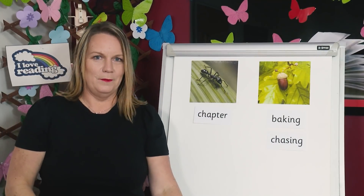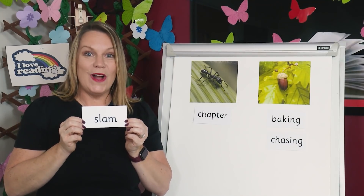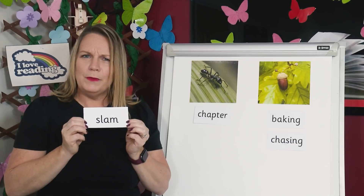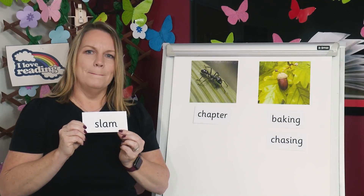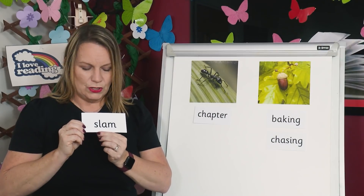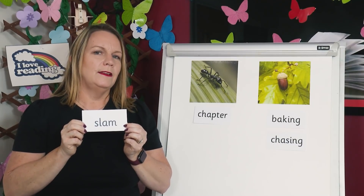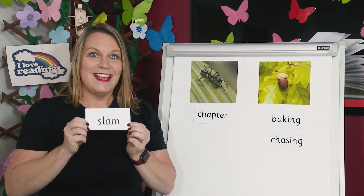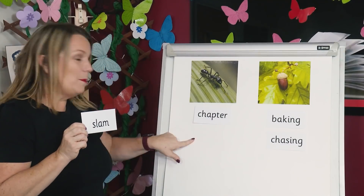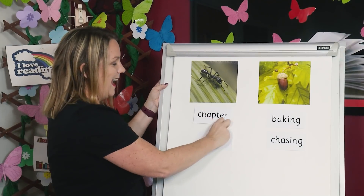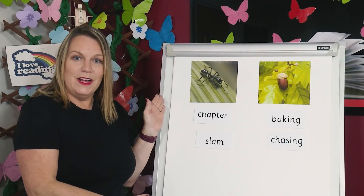Let's do another. Read the word — A or A. Help me work it out. Is it slam or slam? Where shall I put it? Yes, the word slam and it has the sound A. So I'm popping it here under the ant. Brilliant. We've sorted all the words.